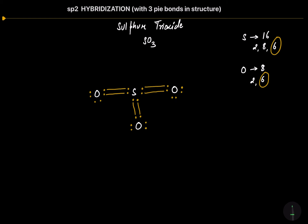Now let's count the number of valence electrons for sulfur after the formation of 2, 2 bonds with 3 oxygen atoms. Sulfur is acquiring 12 electrons after the formation of these 6 covalent bonds, and that's the expansion of octet in case of sulfur atom.